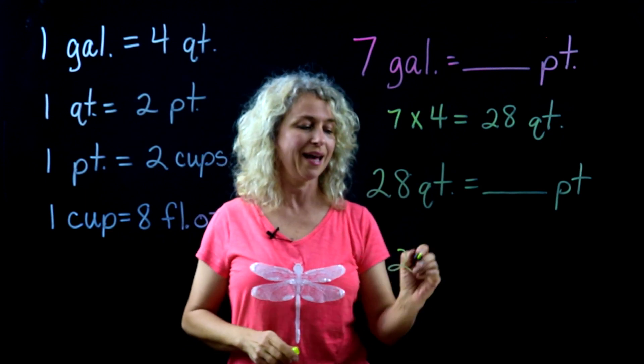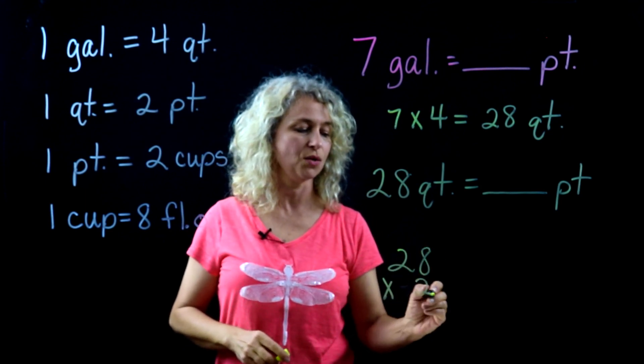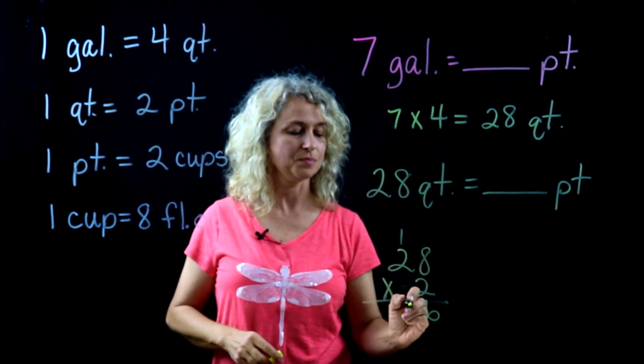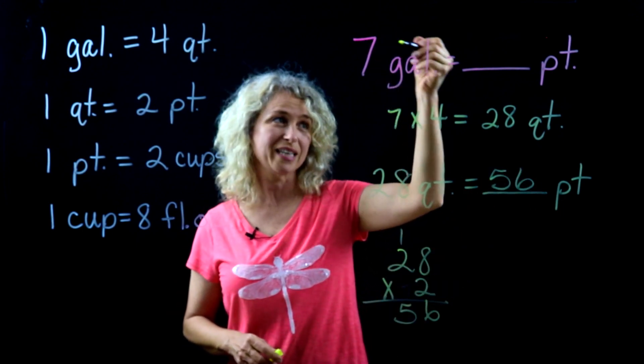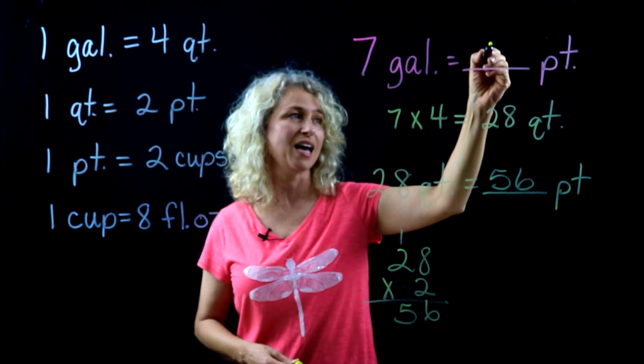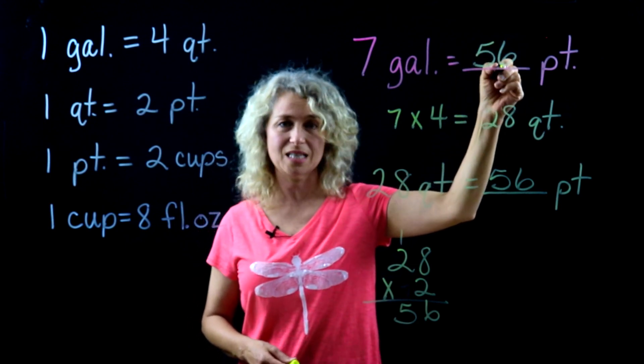How many pints are in a quart? Two. So 28 times two is 56. So in seven gallons you have 56 pints.